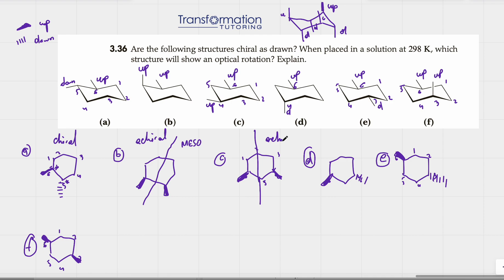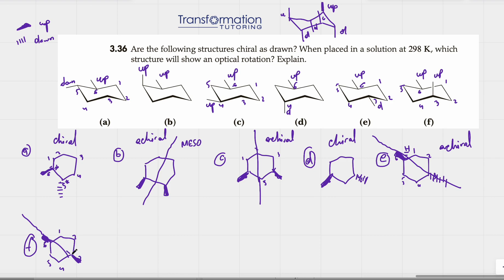For structure D, we have a wedge and a dash, so there is no line of symmetry — the two halves cannot be the same — so D is chiral. For structures E and F, the substituted carbon is not a chiral center because the two paths around the ring are identical. Furthermore, there is a line of symmetry through the substituent in both cases, so E and F are both achiral.